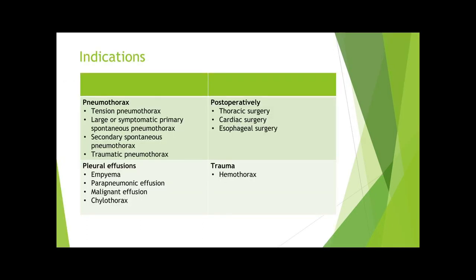A chest tube is a catheter that is inserted through the chest wall into the pleural cavity. The pleural cavity is the potential space surrounding the lungs. This potential space is maintained by negative pressure, which is important in allowing the lungs to expand during inspiration. When fluid or air accumulates in the pleural space, the ability of the lung to expand is limited. To improve lung expansion, this air or fluid must be evacuated.